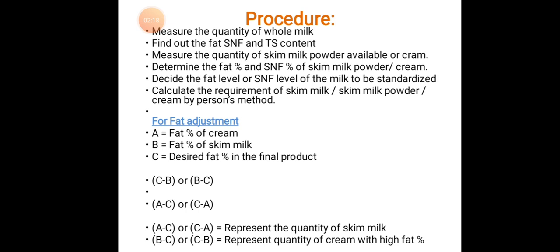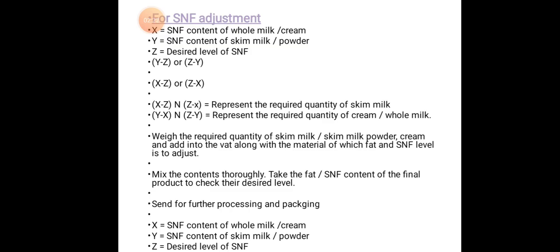For SNF adjustment using Pearson's method: X = SNF content of full milk or cream; Y = SNF content of skim milk or powder; Z = desired level of SNF. The ratios (Y − Z) : (Z − Y) and (X − Z) : (Z − X) are used. (X − Z) and (X − Y) represent the required quantity of skim milk; (Y − X) and (Z − Y) represent the required quantity of cream or whole milk.